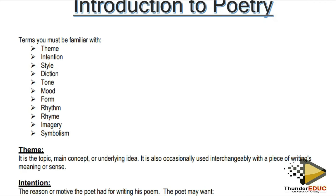It's a repetition 12 times because we have 12 poems, which means the same things apply to all 12 poems — every poem has a theme, an intention, a certain style, diction, tone, mood, form, rhythm and rhyme, imagery and symbolism. That's why we have to internalize them so we will not struggle when we have to identify them without wasting any time.